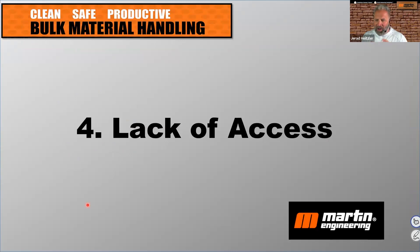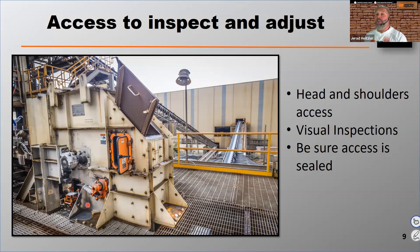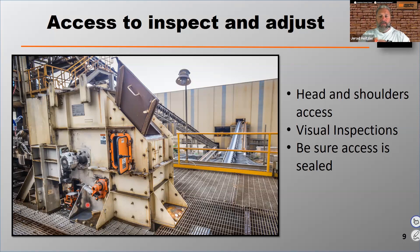Number four: lack of access. Maintenance staff and operators have got to have access to inspect and adjust the equipment. At Martin Engineering, when we rebuild a transfer point, we always recommend what we call head and shoulders access — we want your guys to be able to get an arm, a shoulder, and maybe even a head into that opening so they can make adjustments or inspections. That's going to make the job a lot faster as well.